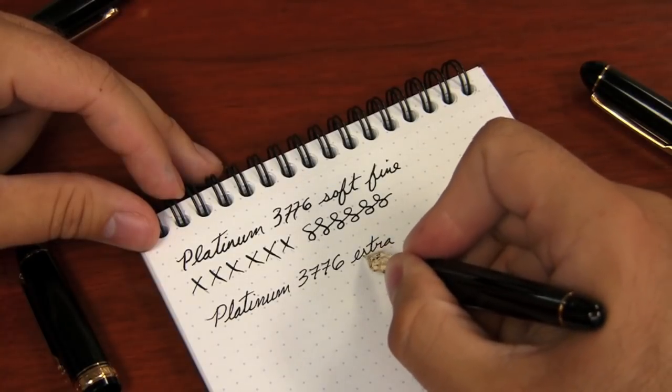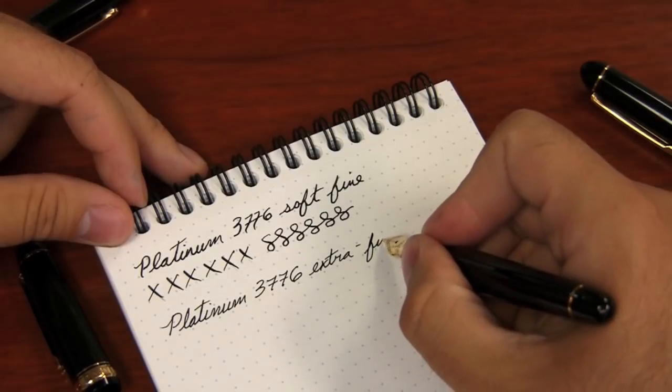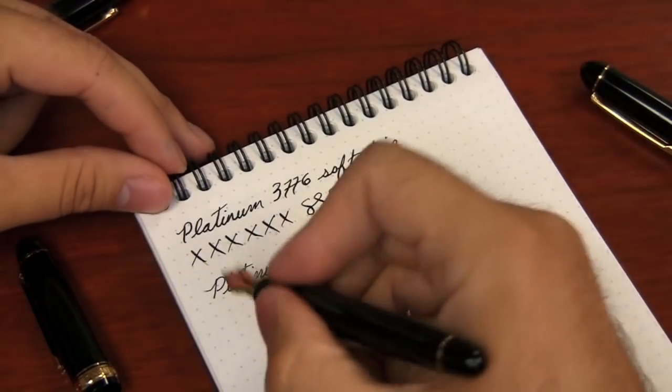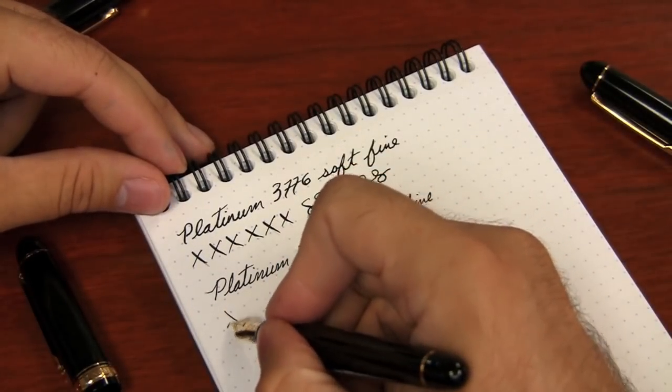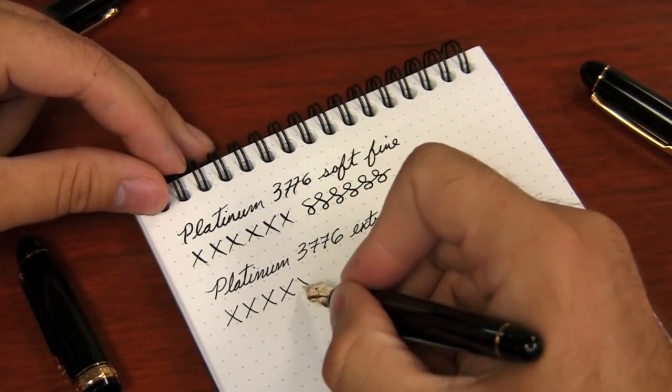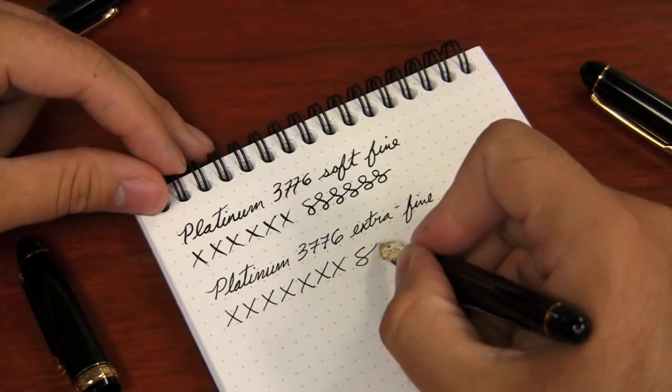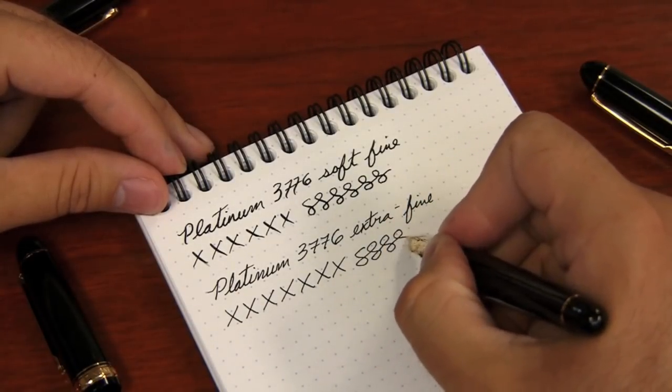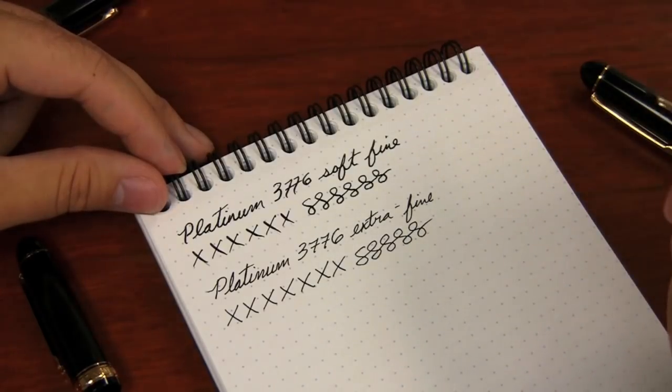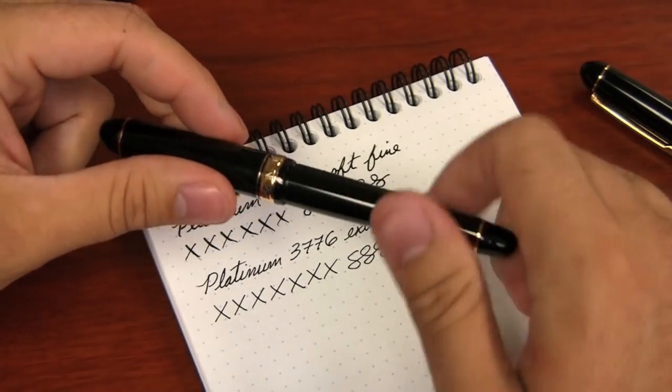Now, one of the things when you're writing with a nib that's this thin, where the line width is this thin, it has a tendency to want to be really scratchy because you're just writing with such a small tip. But these Platinums are some of the best I've used in terms of not being scratchy. It's really kind of hard to fight that when you're writing with such a hairline. But really pretty nice. Okay, so that's the extra fine.